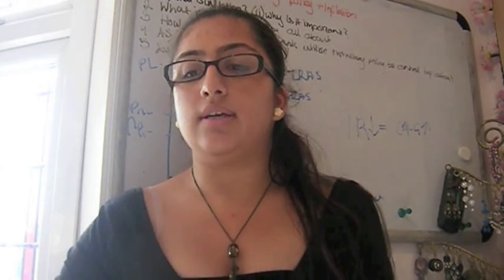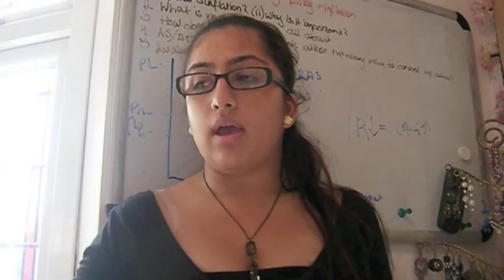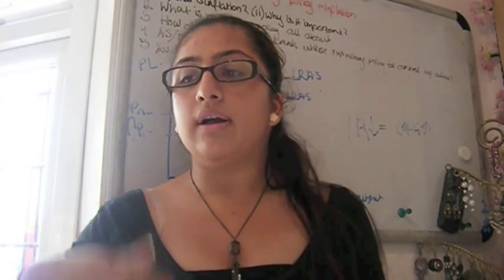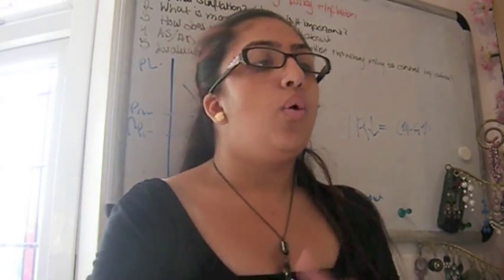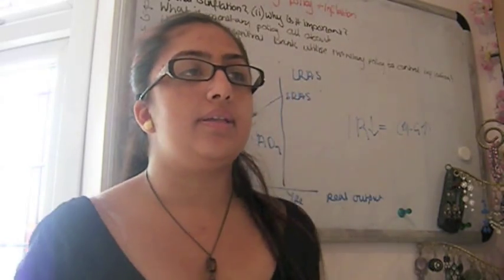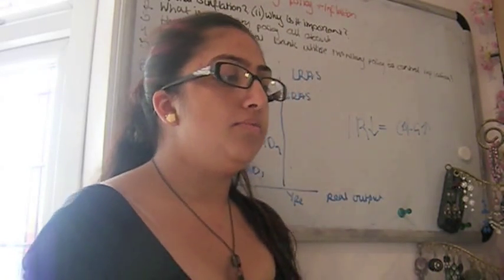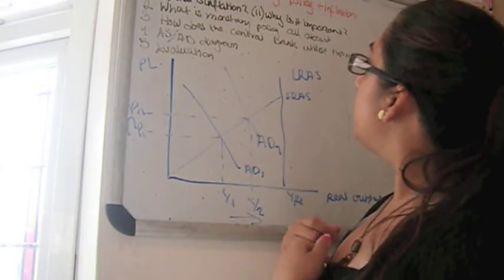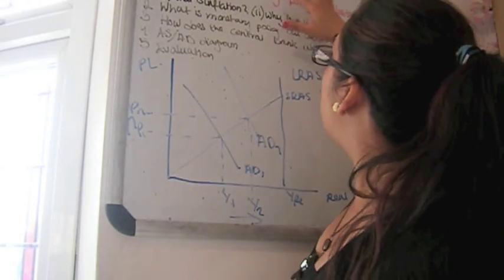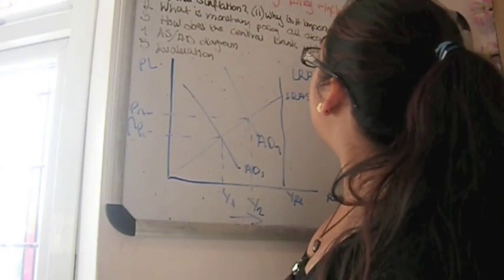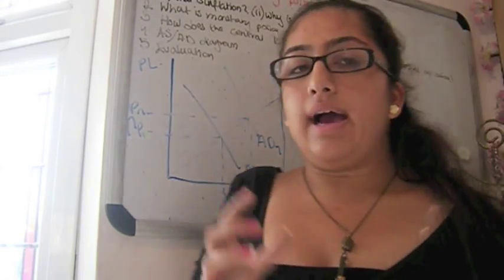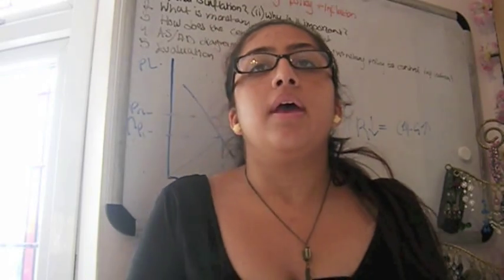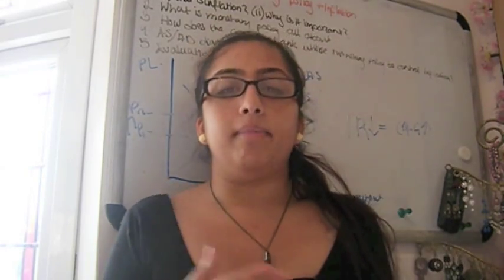So, quantitative easing is purely for government and government spending, whereas interest rates are directed at investment and consumption. Now, the third point I was going to talk about is, how do we connect this all-important inflation to monetary policy? And how does the central bank do this?